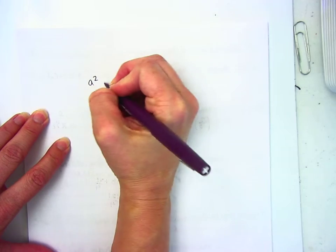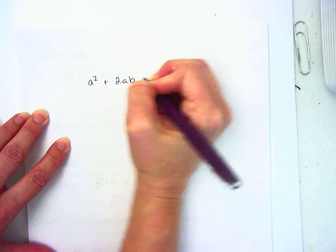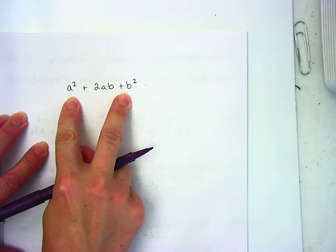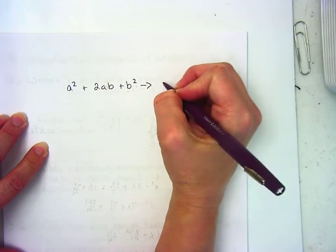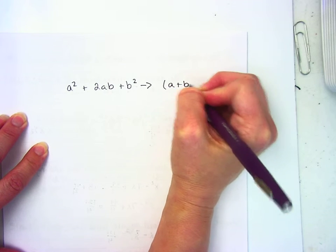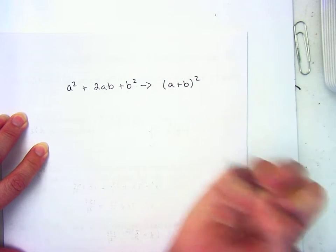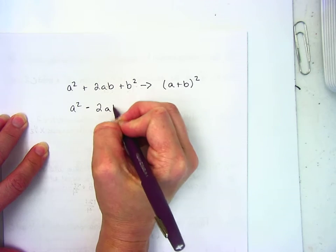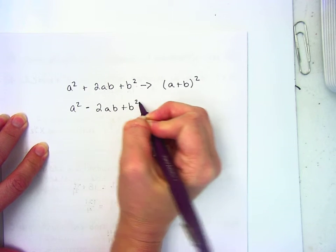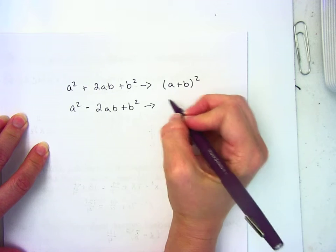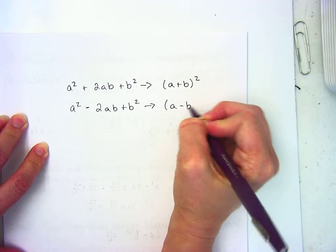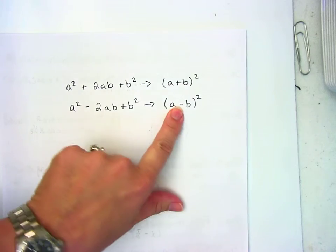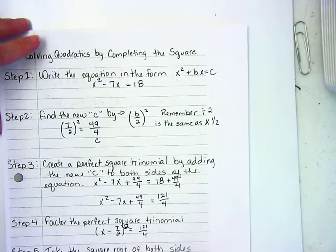a² + 2ab + b² - if I have that situation, then my factored form is (a + b)². However, if I have a² - 2ab + b², my factored form is (a - b)². That minus sign right there, it's going to be in the factored form, and that's where it came from.